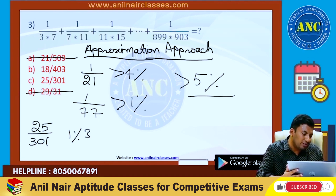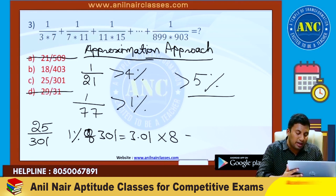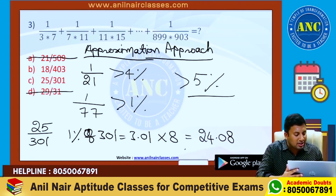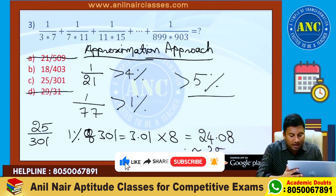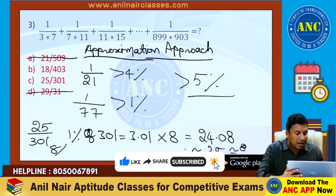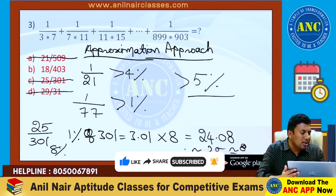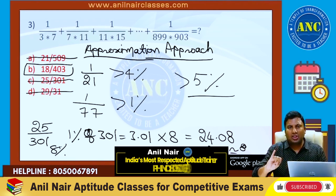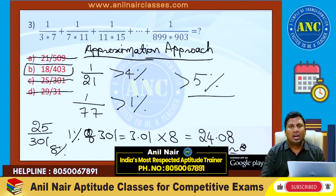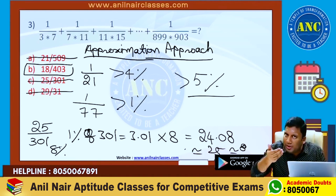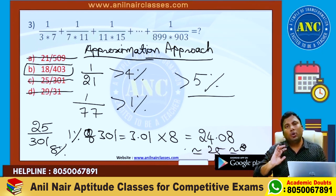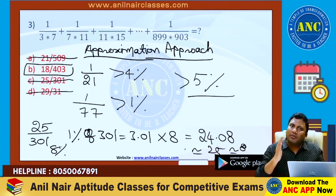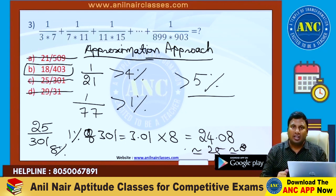1% of 301 is nothing but 3.01. If I multiply by 8, it is 24.08, which is closer to 25. So 25 is closer to 8%. But I want just greater than 5%, so option C is eliminated. The only option left is B. Method B: if there are 2 numerical values in the denominator, condense it to 1 numerical value. If there are 3 numerical values, condense it to 2. Multiply by the multiplication factor: 1 over the common difference between consecutive terms, into the number of terms condensed. Method 2 — I hope it is clear.